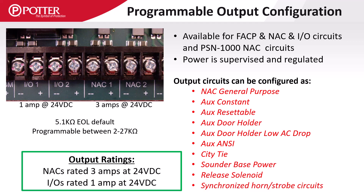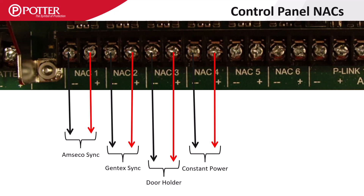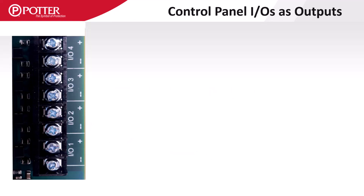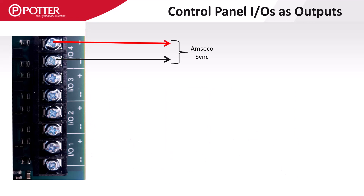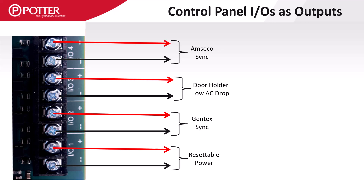All NAC or IO outputs can be configured to use either the Potter standard 5.1k end of line resistor, or can be programmed with a value between 2 and 27k ohm. All NAC circuits are independently programmable with the capability of assigning each a different function. The same ability to independently program outputs is available on the IO circuits. IOs can only be wired Class B.